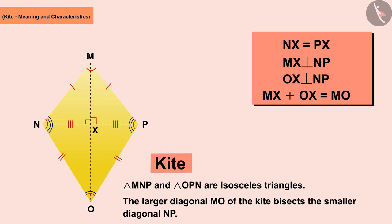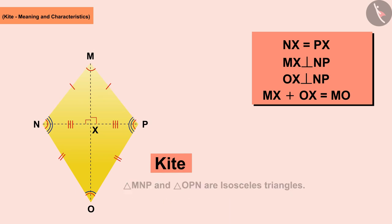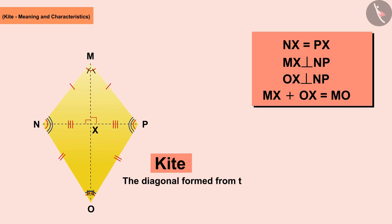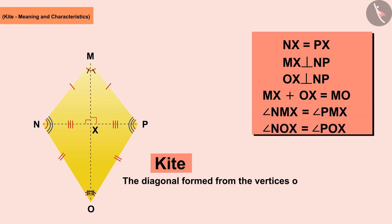We know that in an isosceles triangle, the median drawn from the vertex between two equal sides also bisects the angle at that vertex. That is, the diagonal MO bisects the angles at M and O. Therefore, we can say that the diagonal formed from the vertices of unequal angles of the kite bisects these angles.